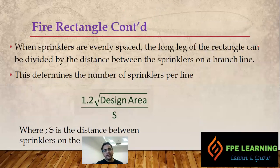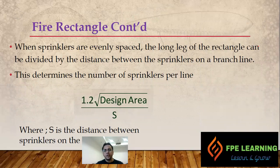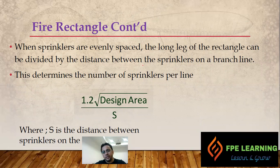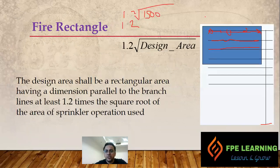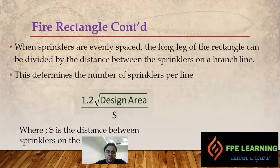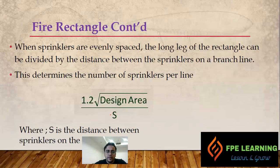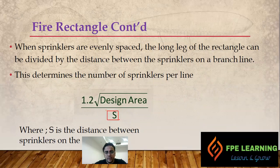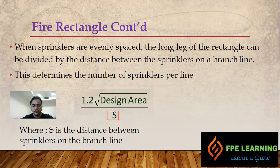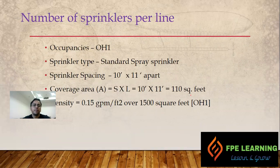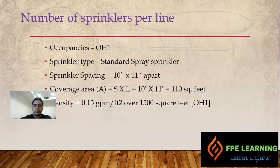When we locate sprinklers evenly, the long leg of rectangle can be divided by the distance between the sprinklers on a branch line. This formula determines the number of sprinklers per line. If you put 1.2 multiplied by square root of 1500 for OH-1 and S is the maximum distance between two sprinklers, we can come to some values.